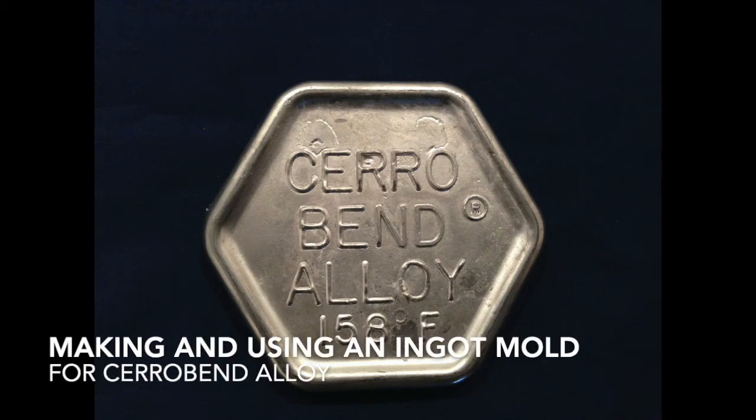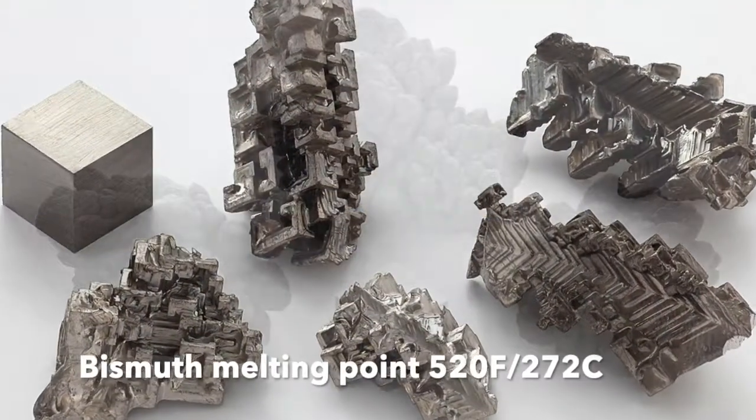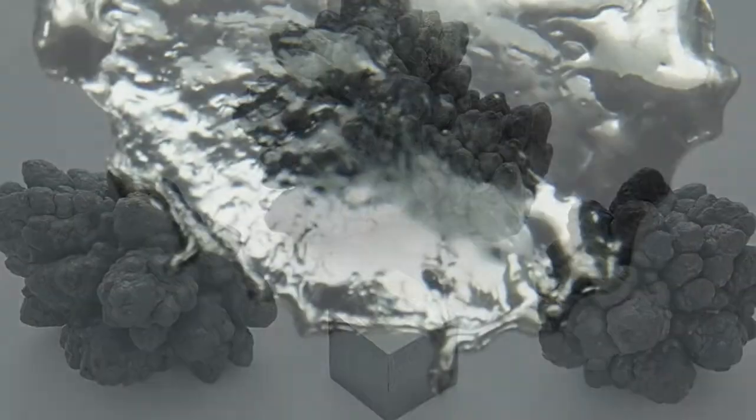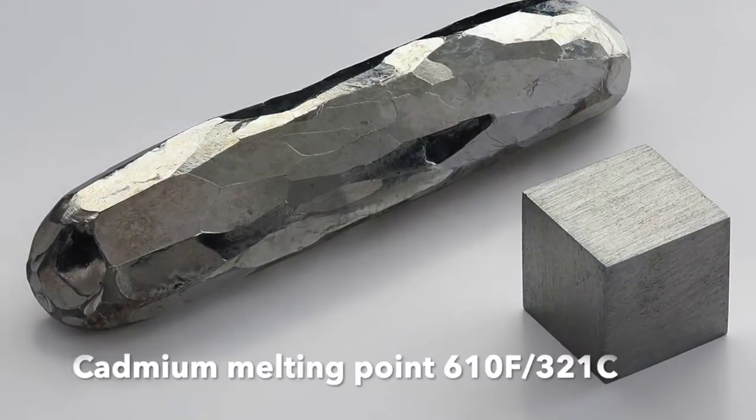I recently picked up a couple of pounds of Cerobend to use as a filler while bending tubing. Cerobend is a eutectic alloy of bismuth, lead, tin, and cadmium.